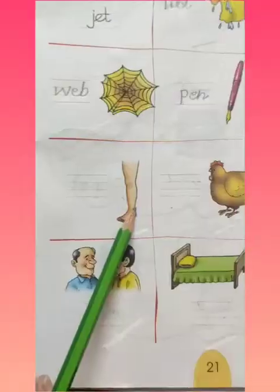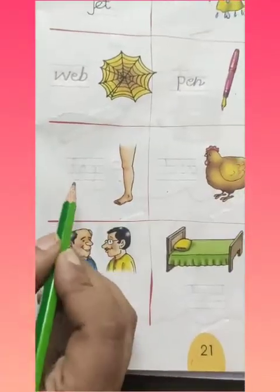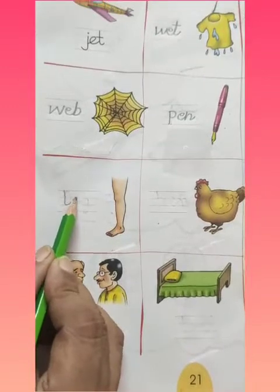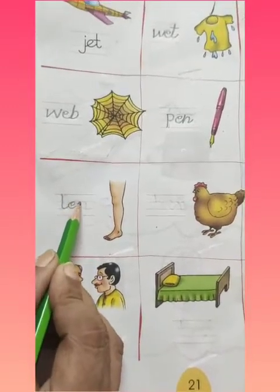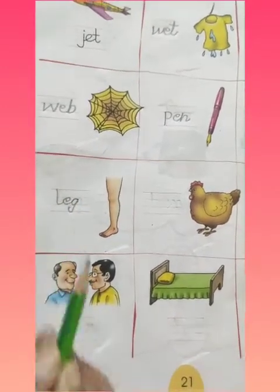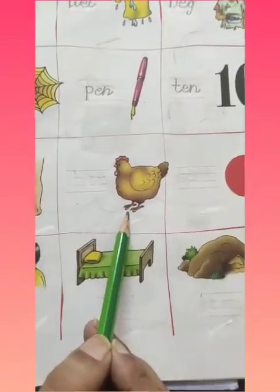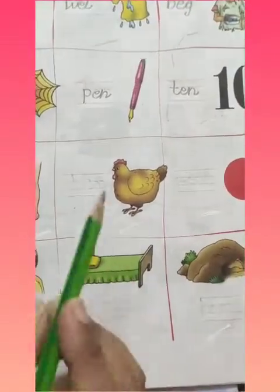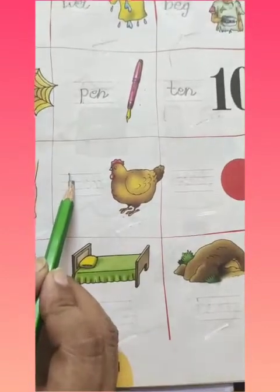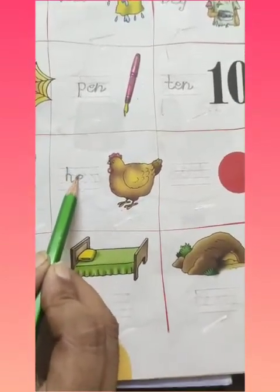This is a picture of a leg. So you will write L-E-G. Leg. See the next picture — this is a picture of a hen. So we will write here: H-E-N. Hen.